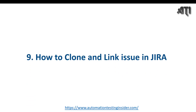Hello everyone, welcome back to another video of Automation Testing Insider. This is the ninth part of the Jira series. Today I'm going to talk about how we can clone an issue in Jira and how we can link one issue to another issue. In the last video I talked about how to set up the sprint and how to start the sprint. Today we'll focus on the different options or actions we can perform once we create an issue.